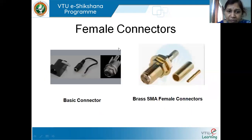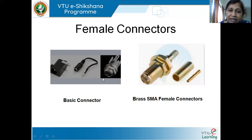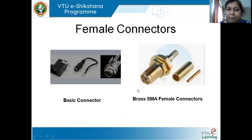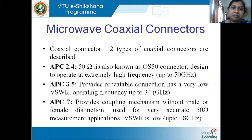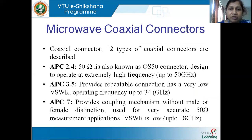Coming to some of the female connectors, as you can see, you have a hole connection here. This is the basic structure of a female connector where we can put a male connector — it is associated with a hole type of structure. These are certain examples of female connectors for different connectors like BNC cable, SMA cable, and all those things. Basically, when we go for microwave coaxial connectors, whether male or female, depending on the type of structure, we have almost eight types of coaxial connectors.